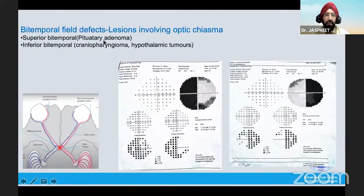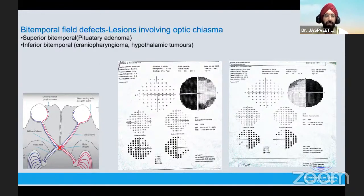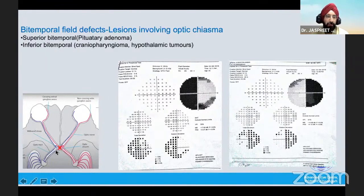Coming to chiasmatic lesions: the most common is a bitemporal field defect involving the optic chiasma. Bitemporal defects result from involvement of the crossing nasal fibers, giving a temporal defect in one eye and a temporal defect in the other. This is most commonly seen in pituitary lesions, like a pituitary adenoma. The pituitary adenoma grows from below, so if it compresses from below, the initial defect would be a superior bitemporal rather than a complete bitemporal. In case of lesions compressing from above, like craniopharyngioma, you would have an inferior bitemporal to start with.